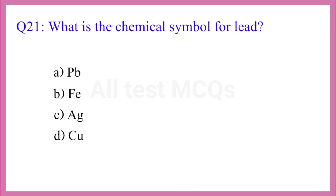Question No. 21. What is the chemical symbol for lead? The correct answer is option A. PB.